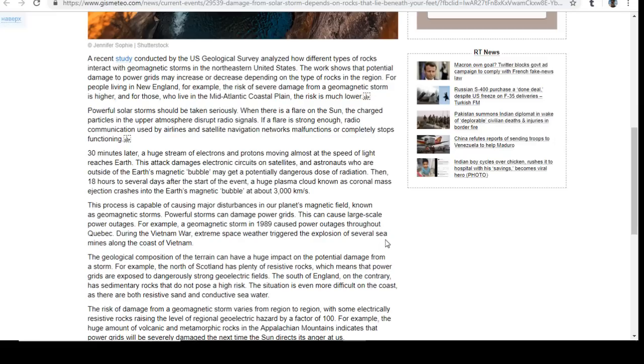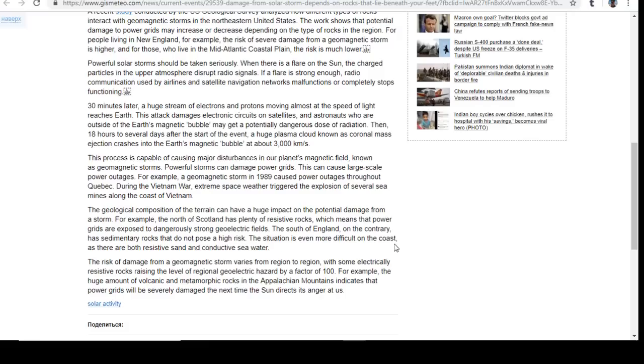This process is capable of causing major disturbances in our planet's magnetic field, known as geomagnetic storms. Powerful storms can damage power grids, causing large-scale power outages. For example, a geomagnetic storm in 1989 caused power outages throughout Quebec. During the Vietnam War, extreme space weather triggered the explosion of several sea mines along the coast. That should be a wake-up call as to what can happen with electrical activity.